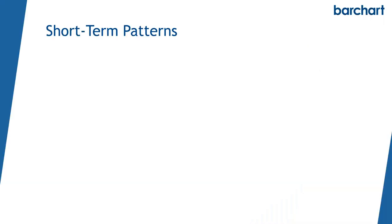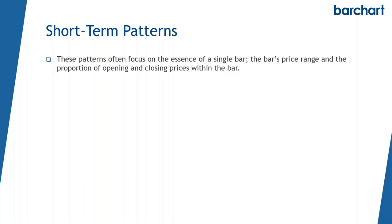So, short-term patterns — what are they and what is it all about? In essence, we are going to focus on the information provided by maybe just a single bar, the range from high to low. Normally, the greater the range, the more price volatility, and the greater the price volatility, the higher the probability of continued price movement. We're also going to look at where the opening and closing prices fall inside of that range, and these can offer clues to the battles behind the bar — the battles between our buyers and sellers.